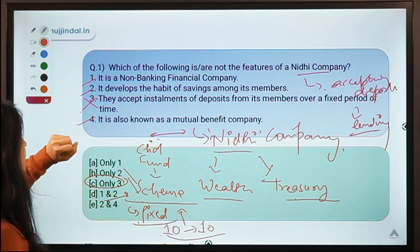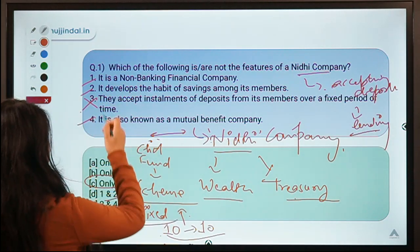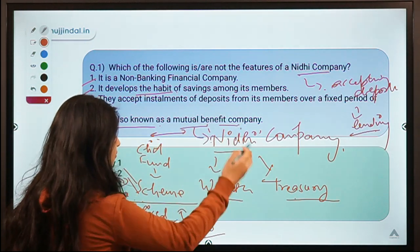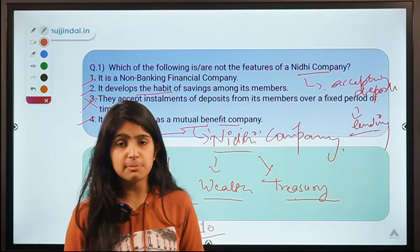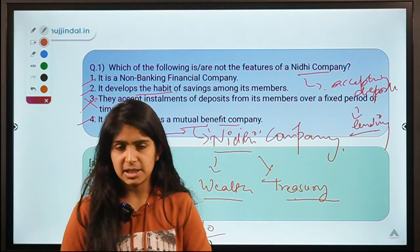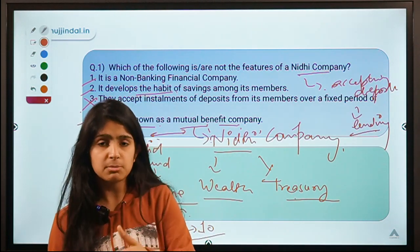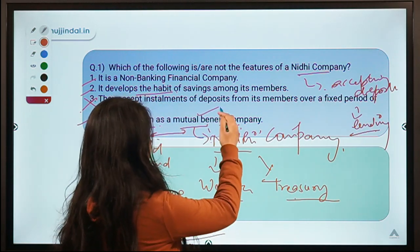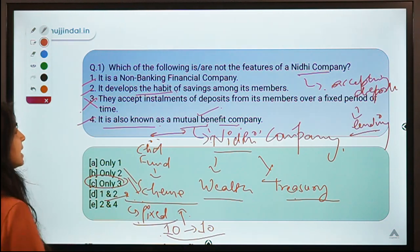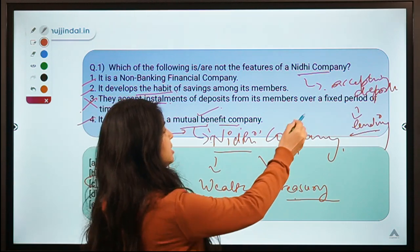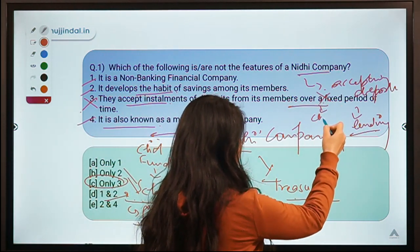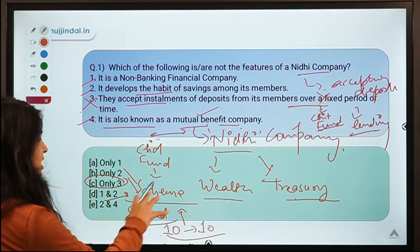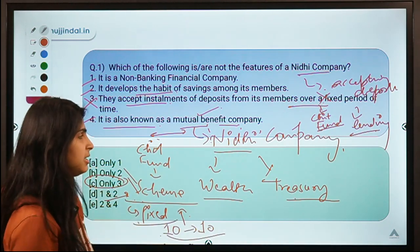Regarding the statements: a Nidhi company is an NBFC — that is correct. It develops the habit of saving among its members — also correct. It is known as a mutual benefit company because both the company and members benefit. The incorrect statement says they accept installments of deposits over a fixed period of time — that is actually a characteristic of a chit fund, not a Nidhi company.